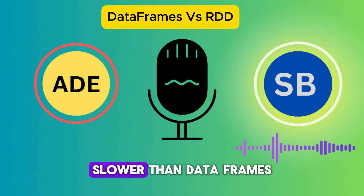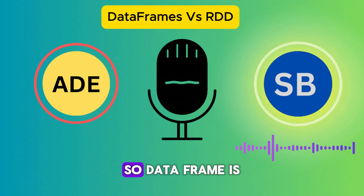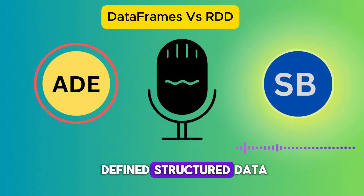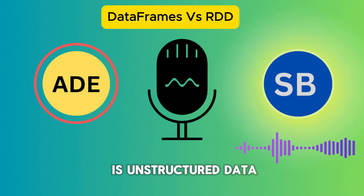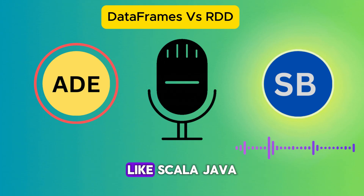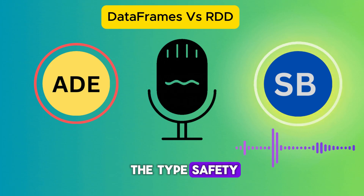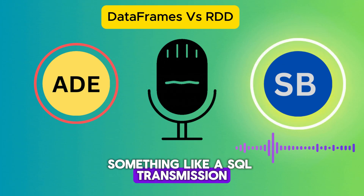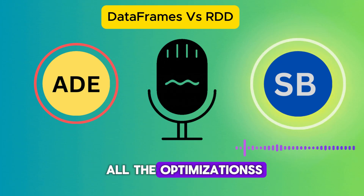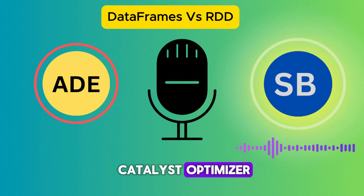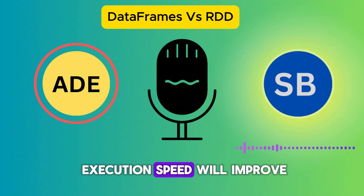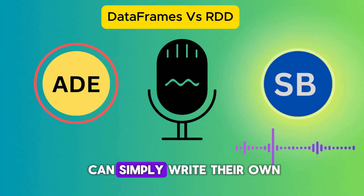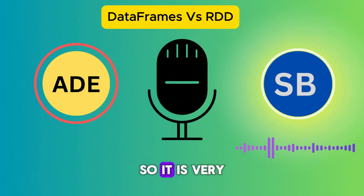DataFrame is like a table in a database with rows, columns, and a defined structure, whereas RDD handles unstructured data. DataFrame supports Scala, Java, Python, and R. It does not have type safety. It supports SQL-style transformations like select, filter, groupBy, and aggregate. The major advantage is the Catalyst optimizer and Tungsten engine, which significantly improve execution speed. It is also very easy to use — SQL developers can simply write SQL and execute it in Spark.